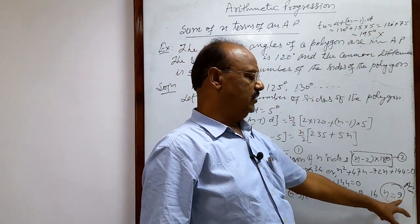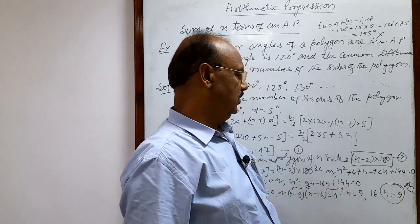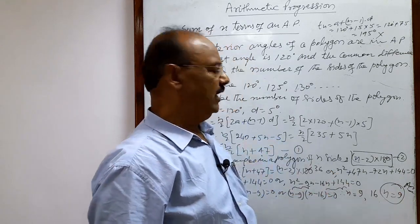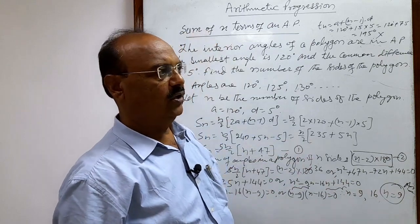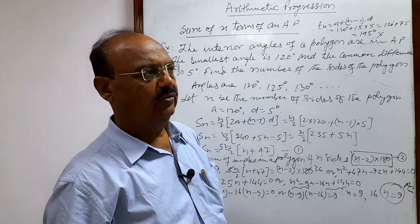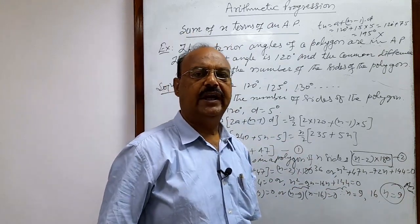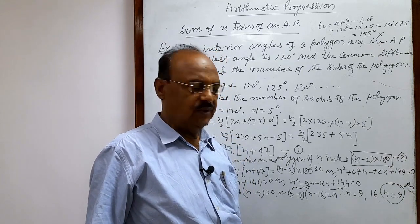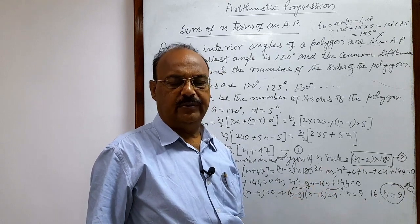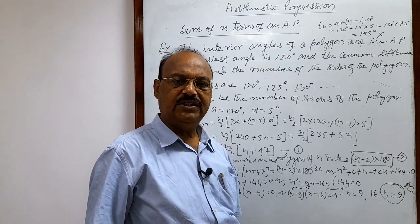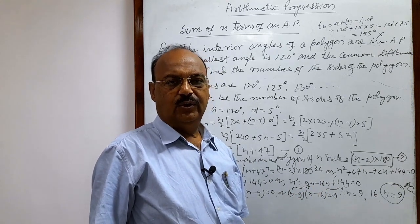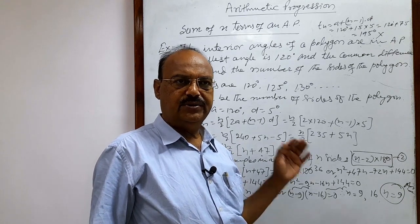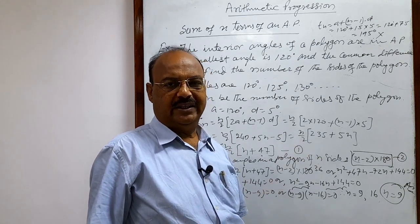Finally, n equals 9, meaning the number of sides is equal to 9. This is the answer. I hope you have understood this question. In the next video, we will discuss arithmetic means and do some problems related to that topic. Thank you very much for watching this video. Hope you will remain watching these videos and enjoy mathematics learning.